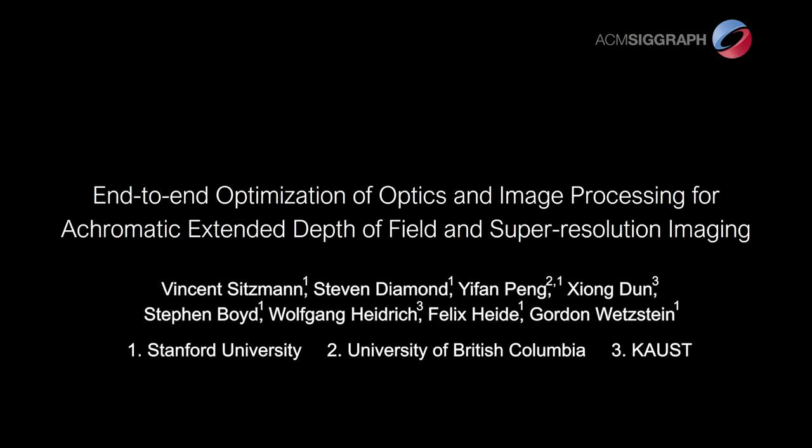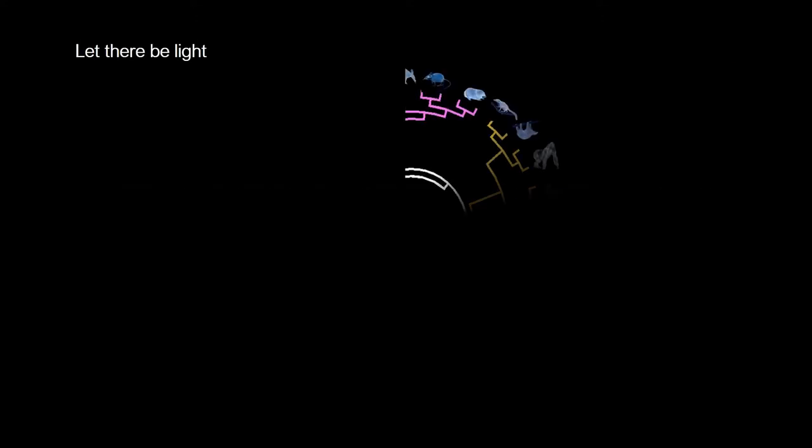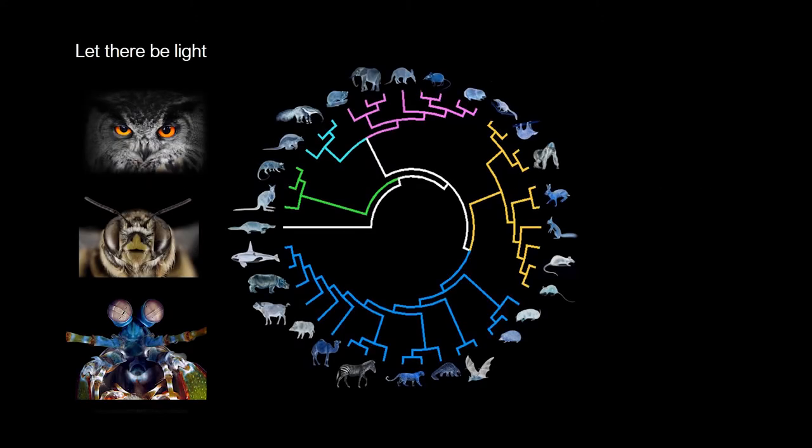We propose end-to-end optimization of optics and image processing for achromatic extended depth of field and super-resolution imaging. The visual systems of animals are adapted to their environments, an example of domain-specific optics.